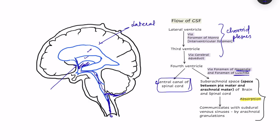Via these foramina, CSF enters into the subarachnoid space, first entering the cisterns present below the cerebellum — basically the cisterna magna — and via this cistern it flows into the subarachnoid space. So CSF is present everywhere in the subarachnoid space and also in the central canal of the spinal cord, formed in the walls of the ventricles by the choroid plexus.